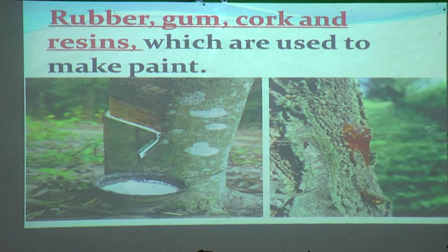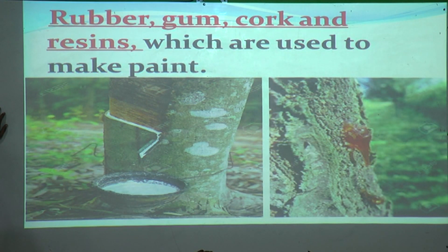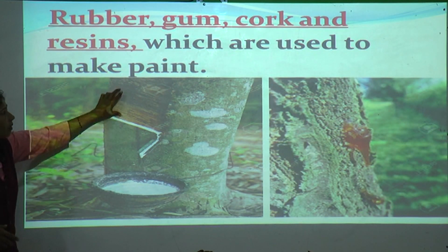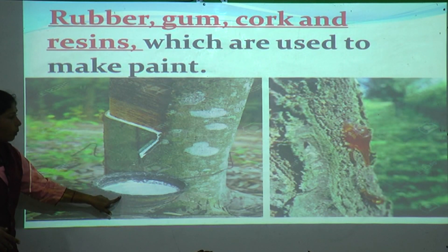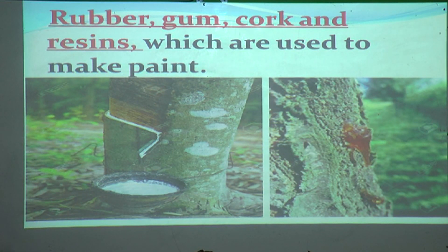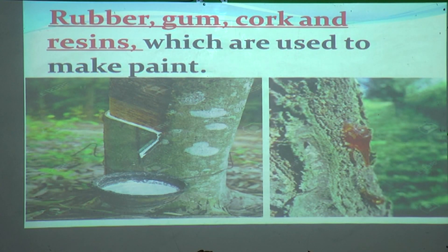Forests also give us rubber, gum, cork, and resin, which are used to make paint and other products. We regularly use rubber — it comes from a tree as a white liquid collected in a bowl. Gum also comes from a tree; when we scratch or cut the tree, a sticky brownish color comes out. We use gum to paste paper.